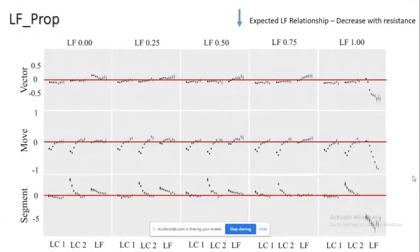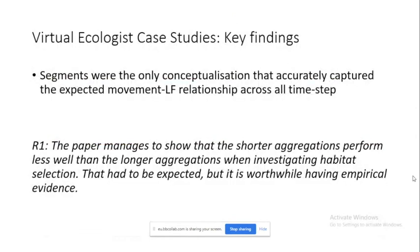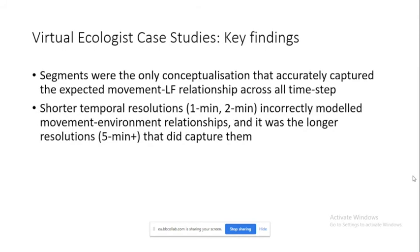And there's an expected relationship there with resistance. As we go across from LF zero to LF one, we expect the relationship to increase. And what we can see is we do see this for segments, but we don't really see it for vectors and moves. And more importantly, when we look at this going from one minute to two hours, you get large variation there between one minute and two hours. But again, at least within the same positive or negative coefficient, but particularly when we come down to moves here, we can see we get completely different results based on one or two minute steps compared to two hour steps. Some interesting results there. And this was consistent across representing linear features as means or linear features as proportions within the buffer.